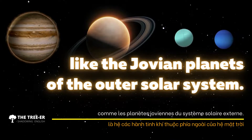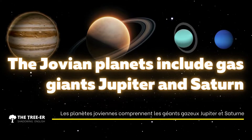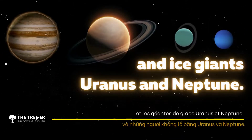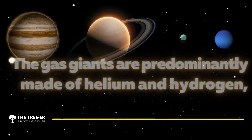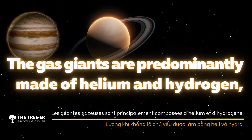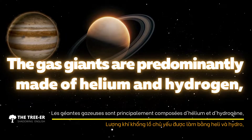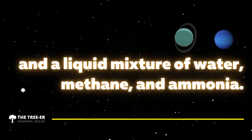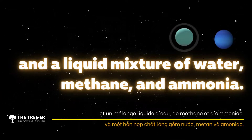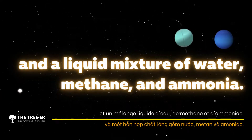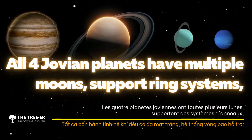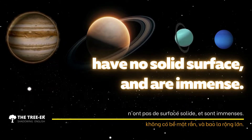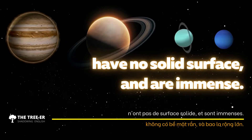Beyond the terrestrial planets of the inner solar system lie the Jovian planets of the outer solar system. The Jovian planets include gas giants Jupiter and Saturn, and ice giants Uranus and Neptune. The gas giants are predominantly made of helium and hydrogen, while the ice giants also contain rock, ice, and a liquid mixture of water, methane, and ammonia. All four Jovian planets have multiple moons, sport ring systems, have no solid surface, and are immense.